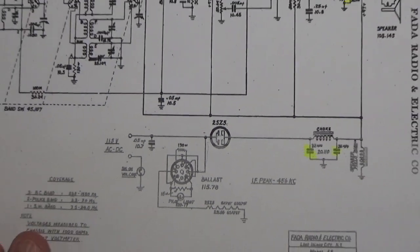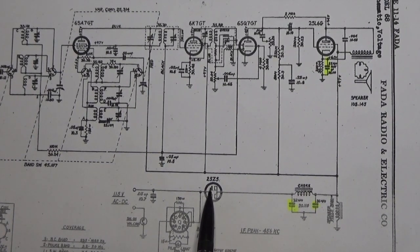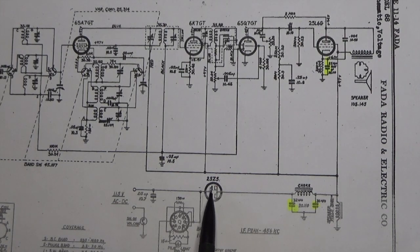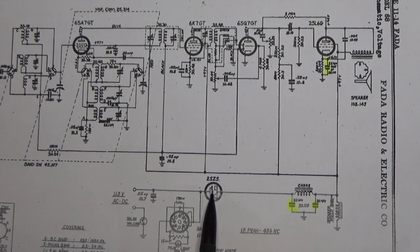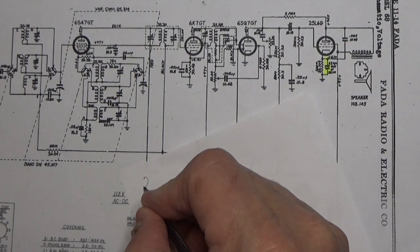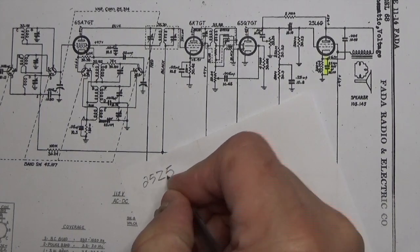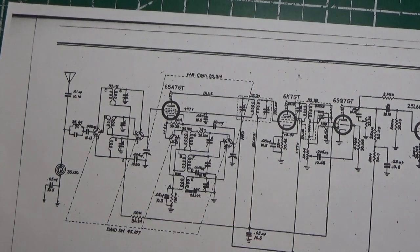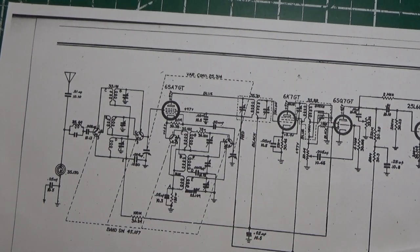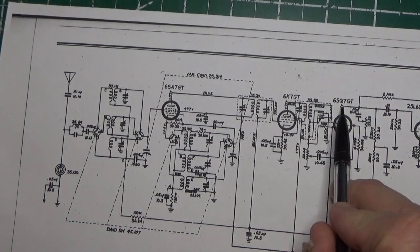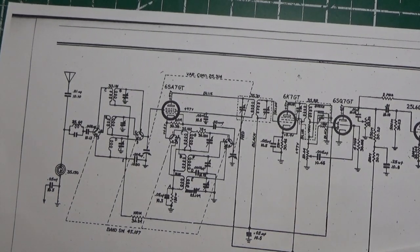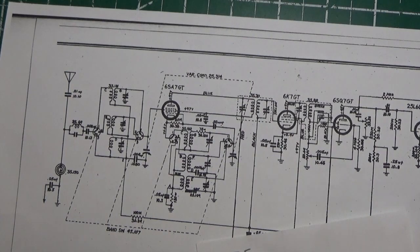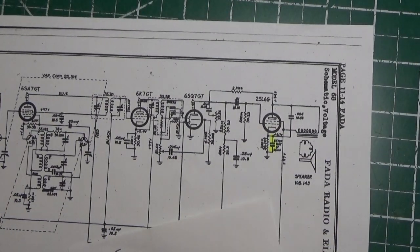We're going to pull the shot back a little bit and let's see what the tube lineup is. First of all, our rectifier is a 25Z5, a six-pin tube. Then we have a 6SA7, then a 6K7, then a 6SQ7, and our output tube is a 25L6.